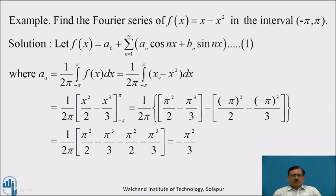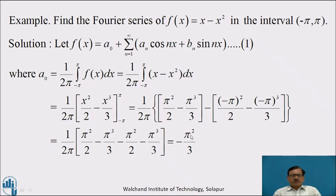Now we can integrate with respect to x, which equals 1 by 2π: integration of x is x square by 2, minus integration of x square is x cube by 3, with limit minus pi to pi. Putting the upper limit x equal to pi we get pi square by 2 minus pi cube by 3, minus the lower limit with x equal to minus pi giving minus pi square by 2 minus of minus pi cube by 3. By simplifying we get a naught equal to minus pi square by 3.